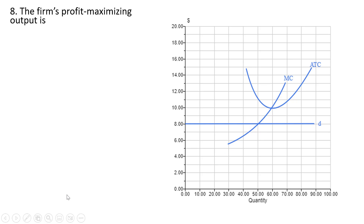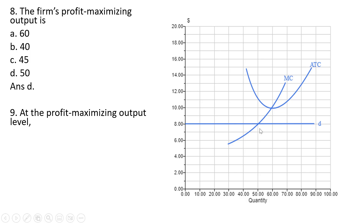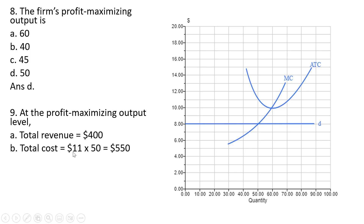Question 8: the firm's profit-maximizing output occurs where the marginal cost curve intersects demand, at 50 units of output. Answer D. At the profit-maximizing output, total revenue is $400—that is correct: 8 times 50 is $400. The firm is selling its product at $8 per unit, selling 50 units. Total cost is 11 times 50, or $550.